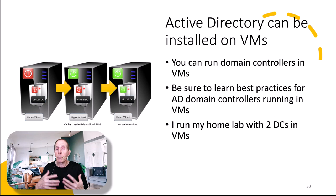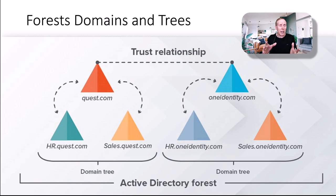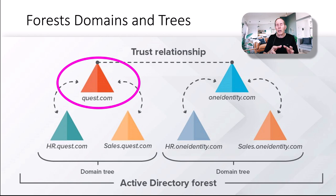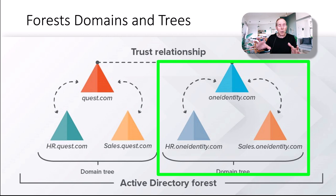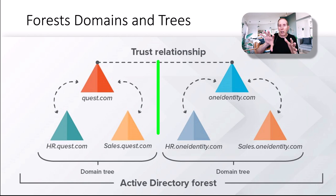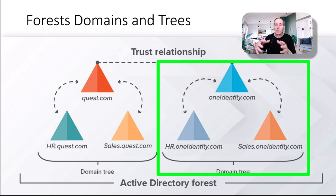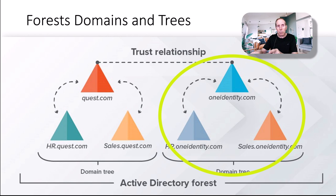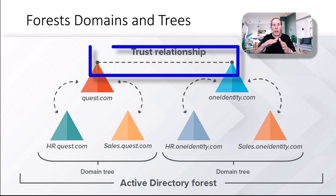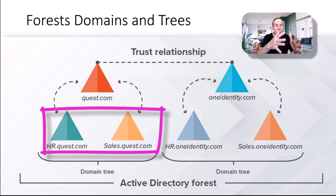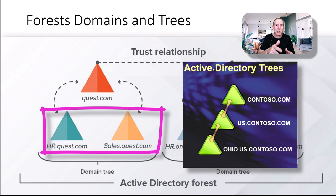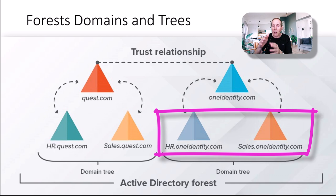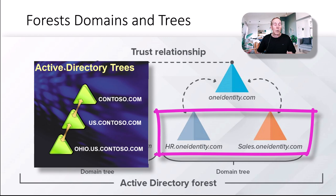Understanding forest, domains, and trees: why does the first domain have to be a forest root domain? Because many companies acquire or integrate with another company. For example, Quest.com purchasing OneIdentity.com — Microsoft builds a mechanism to connect that DNS space with its domain and tree and bring it into quest.com. That is what a forest is for. In Quest, we have two subdomains and their relationship is known as a tree. OneIdentity.com has two subdomains. When you take Quest.com and OneIdentity.com and combine them in Active Directory, you now have a forest.